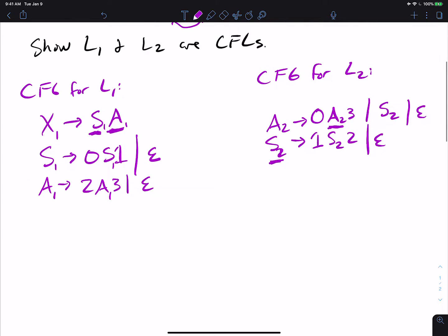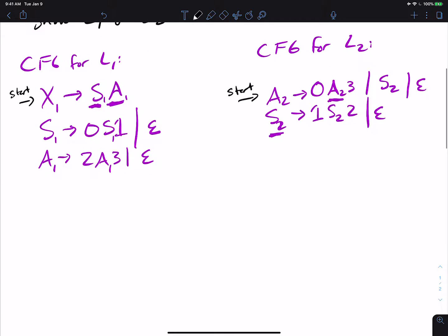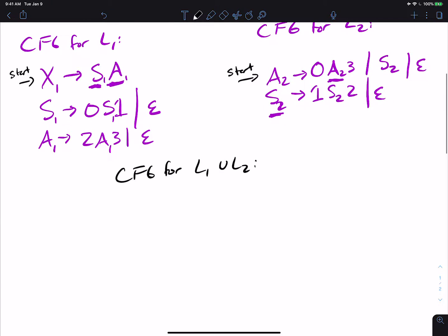So then if we want a CFG for the union, and so here we're saying that this is the start variable and this one is the start variable. So then if I want a CFG for L1 union L2, what we would want to do is to have a brand new start variable I'm going to call s0. So this is the start variable in this grammar. And that goes to the start one for L1 or the start variable for L2. So that's x1 or let's say a2.